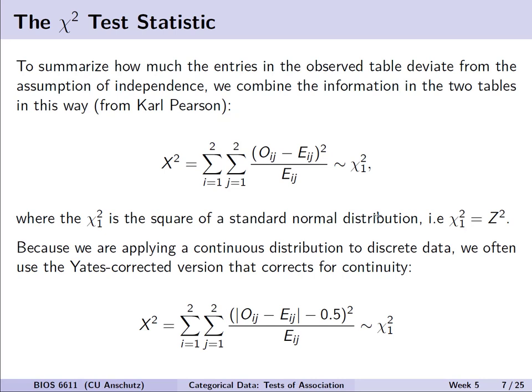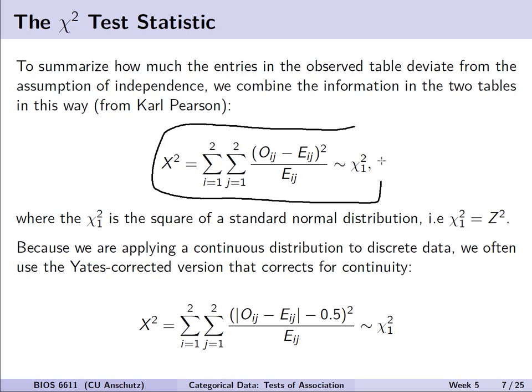The chi-squared test statistic summarizes how much the entries in what we observed deviate from an assumption of independence. What Karl Pearson did is combine the observed and expected tables by summing over the different observed and expected combinations and how much they deviate. He identified that this calculation is approximately distributed as a chi-squared distribution with one degree of freedom, which can also be thought of as the square of a standard normal distribution — the direct relationship between chi-squared with one degree of freedom and the normal distribution with mean zero and variance one.